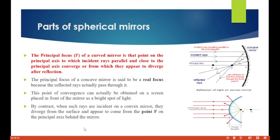The principal focus of a curved mirror is that point on the principal axis to which incident rays parallel and close to the principal axis converge, or from which they appear to diverge after reflection. For a concave mirror the rays come in, reflect, and all pass through F — they converge. That is why it is called the concave or converging mirror.